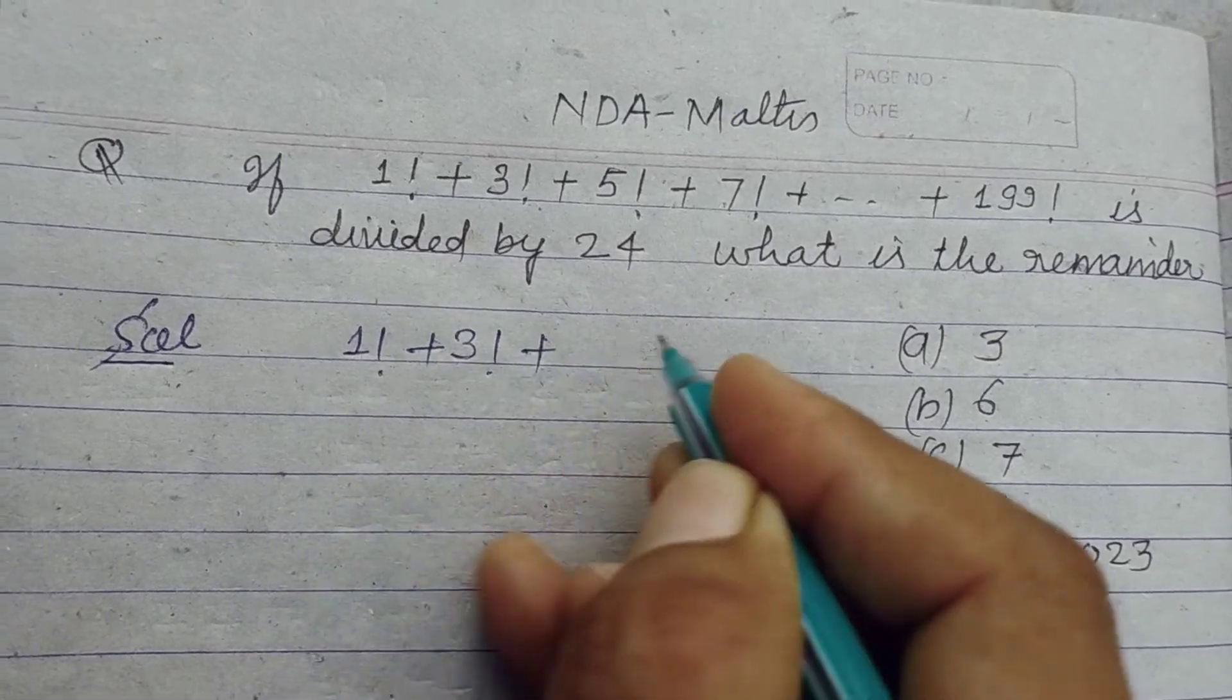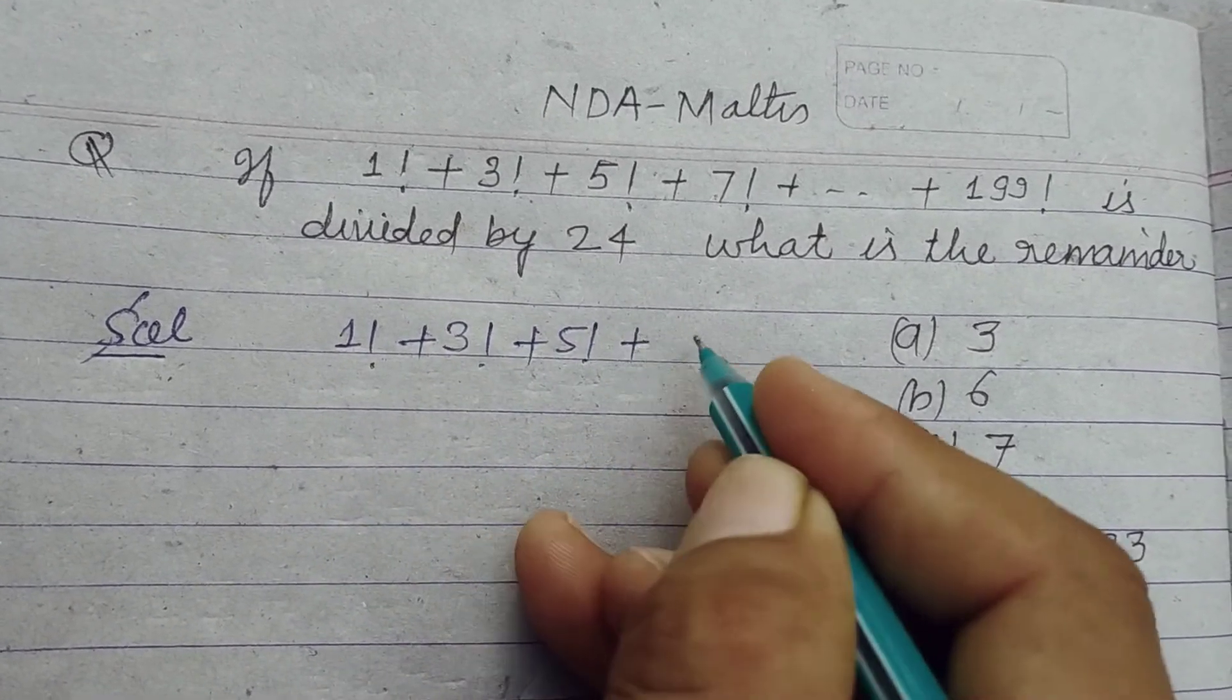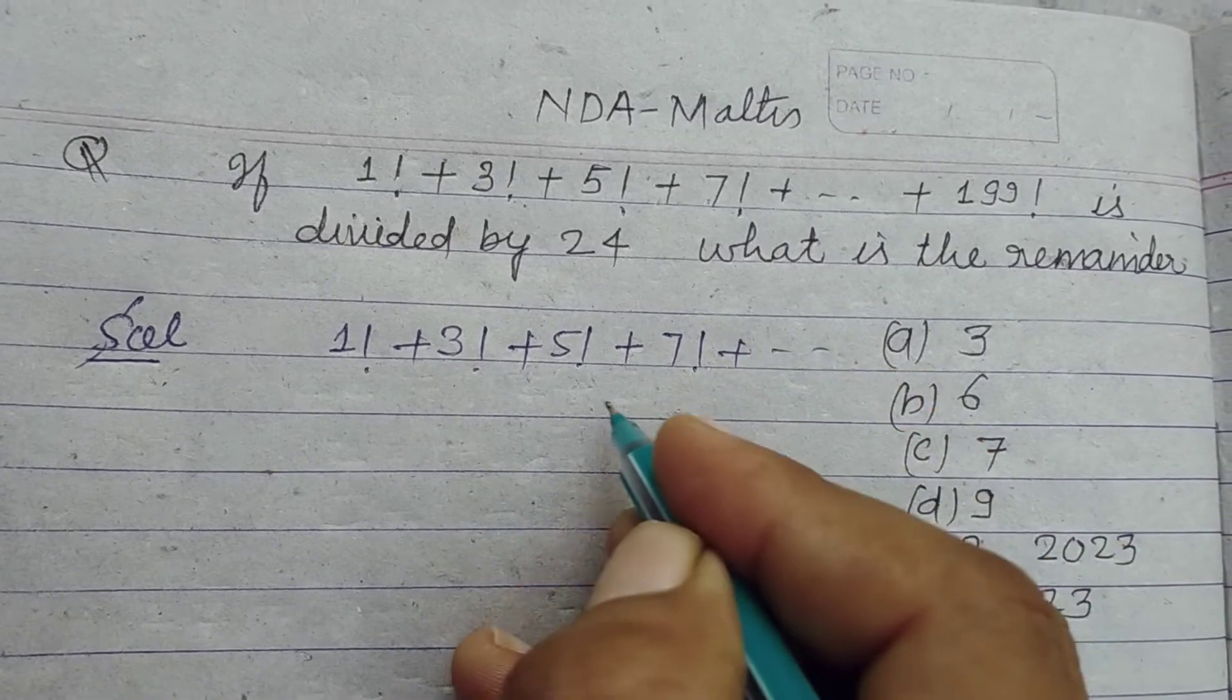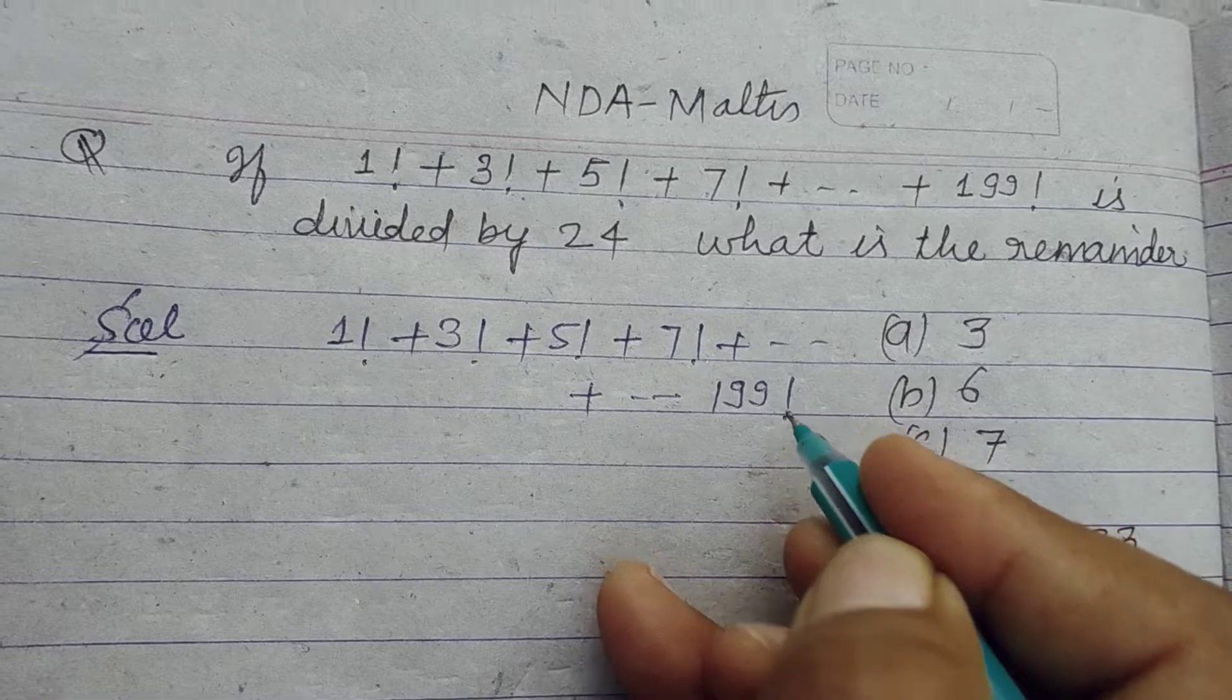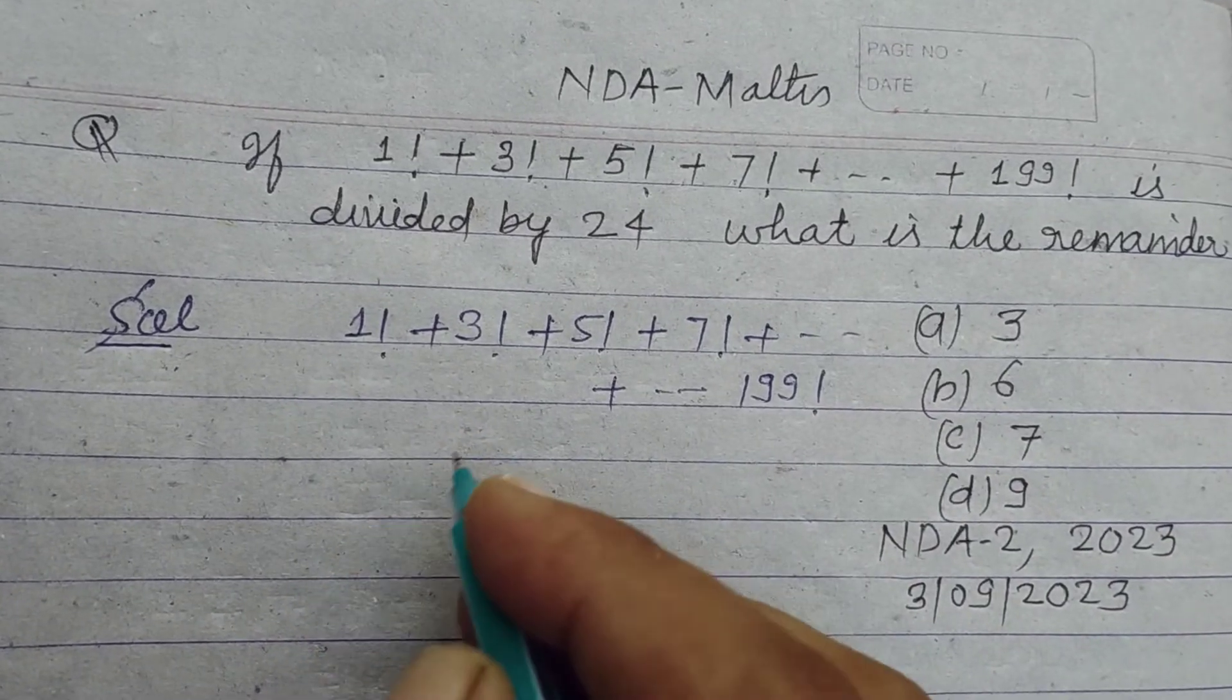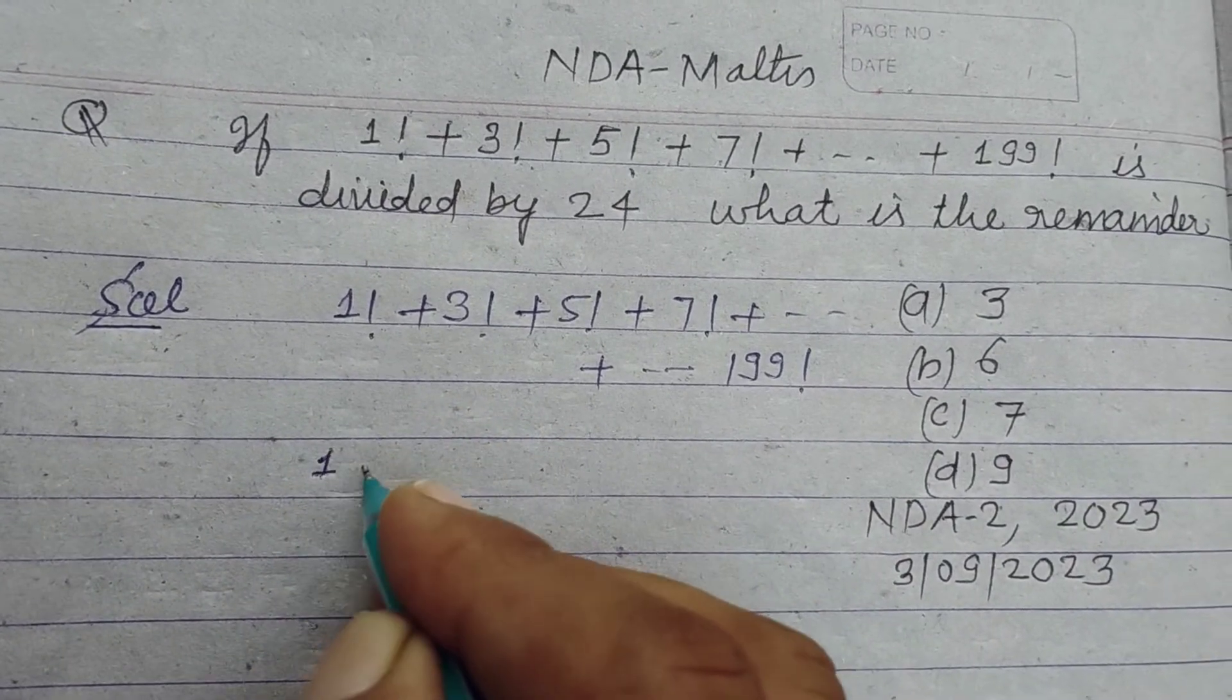Plus factorial 3 plus factorial 5 plus factorial 7 and up to factorial 199. Student, here 1 is...